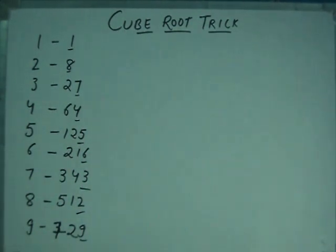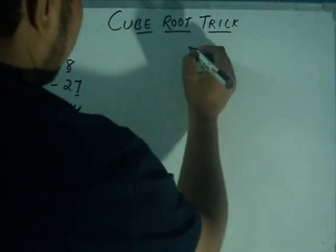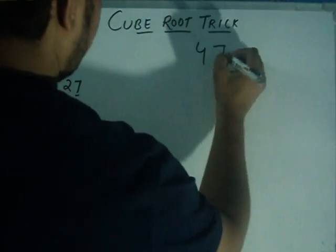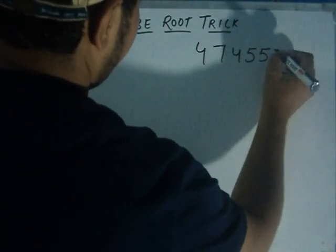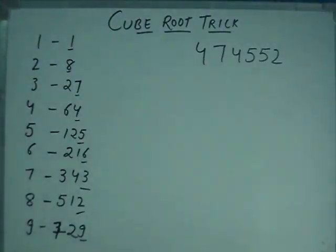Let's take an example to check this trick. Like, first it is value 474552. For this trick, you have to do another thing.